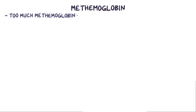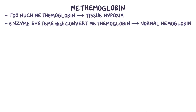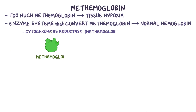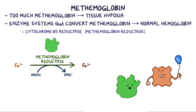Too much methemoglobin can eventually lead to tissue hypoxia, so in order to protect ourselves, we have a few enzyme systems that convert methemoglobin to normal hemoglobin. The most important one is cytochrome B5 reductase, also known as methemoglobin reductase, because it uses NADH as a reducing agent to donate electrons to iron in the iron 3+ state, and reduces it to the iron 2+ state. It's like that boss that comes by to make the lazy heme productive again.